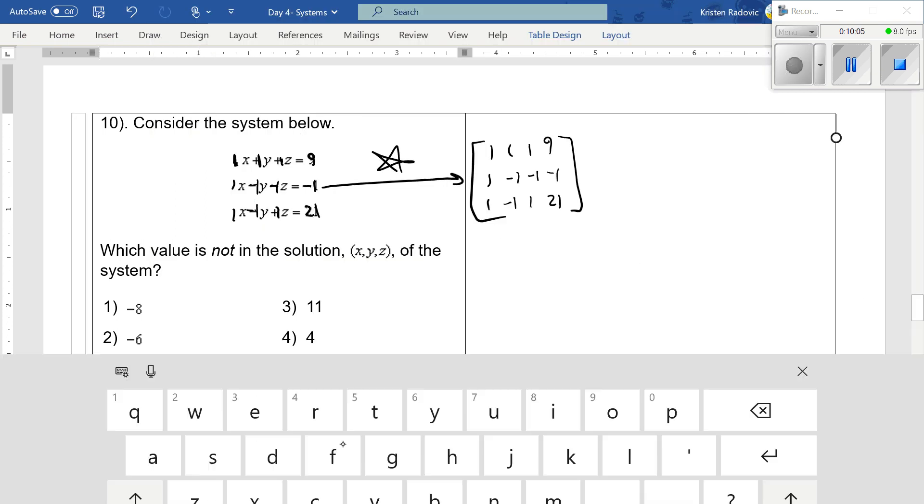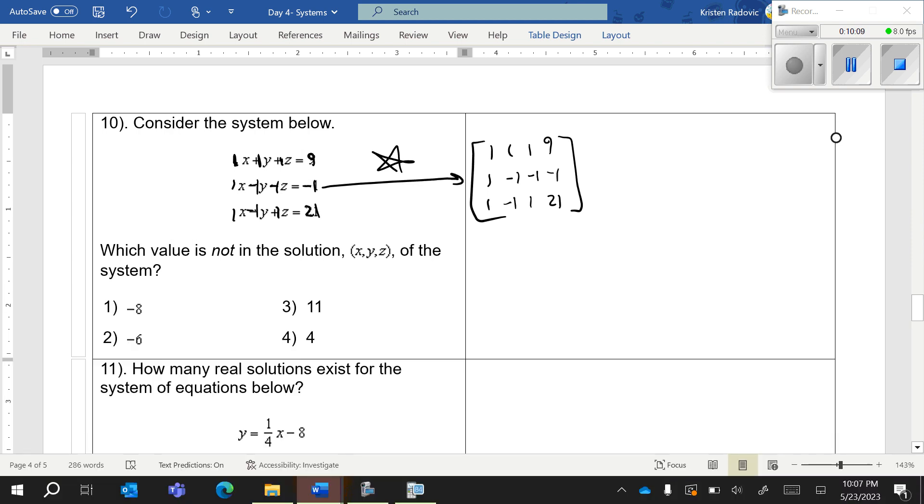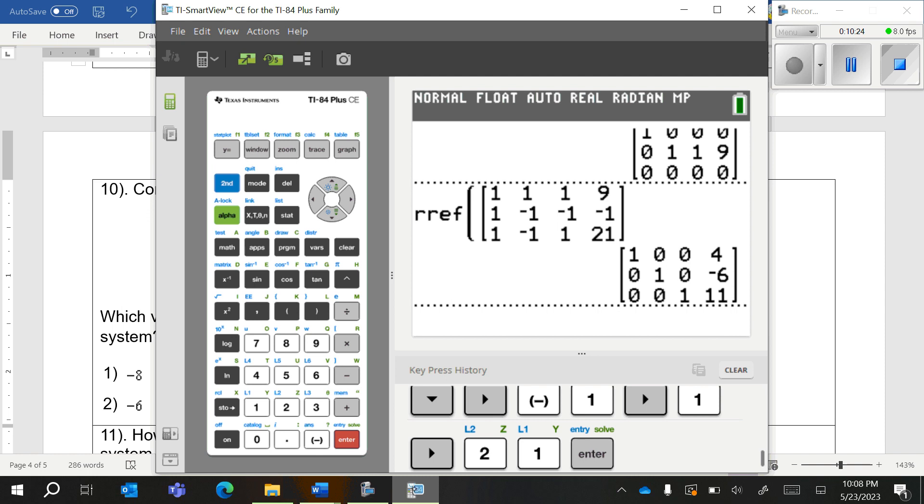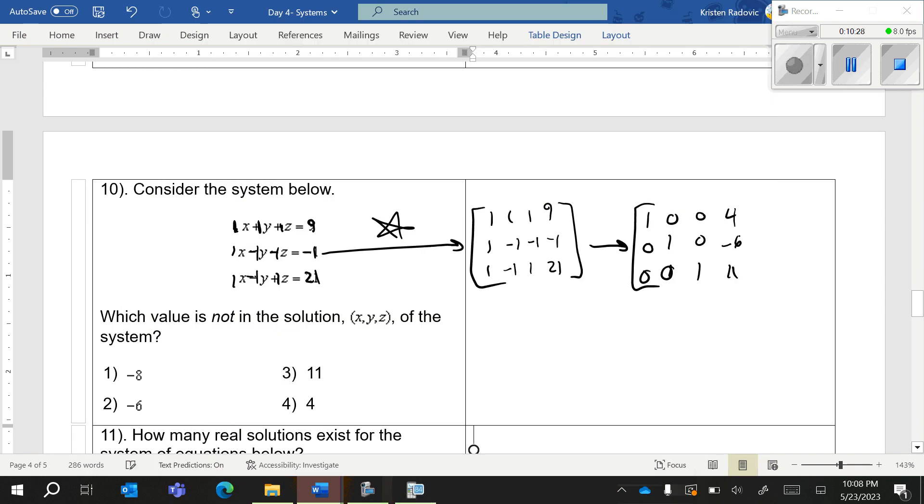When you solve this, you're always going to get the same format. You're going to get these zeros with the ones on a diagonal, and then your answers are going to appear in the last column: 4, negative 6, and 11. What this means is that your first column is your x values, then your y values, and then your z values. This is 1x is equal to 4, this is 1y is equal to negative 6, and this is 1z is equal to 11.